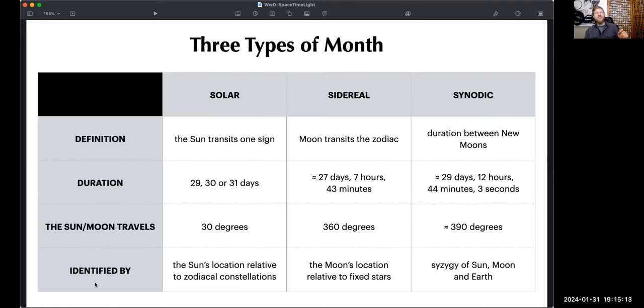And on this next slide, we're going to look at three different types of month that we can measure. There's a solar month, sidereal month, and a synodic month. Some people say synodic. Anyway, synodic is how I know how to say it. So three types of month.